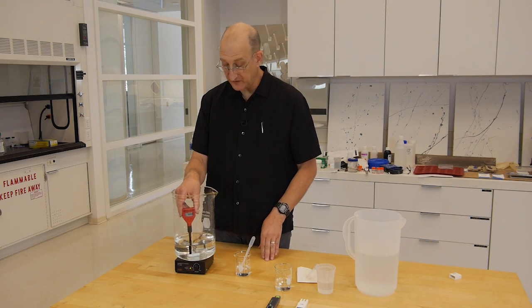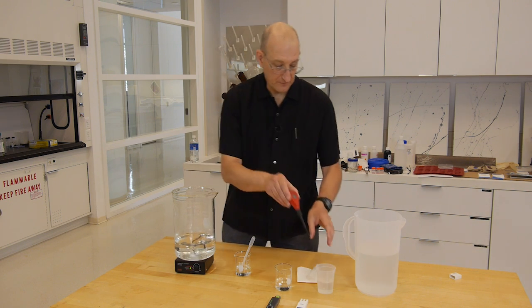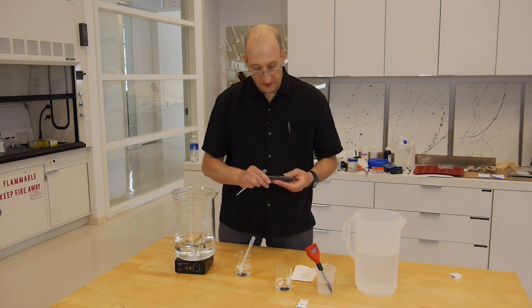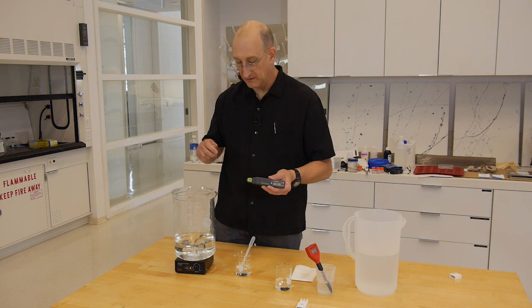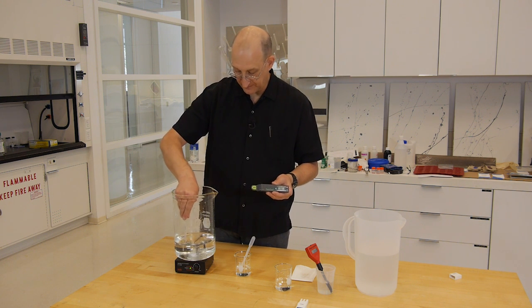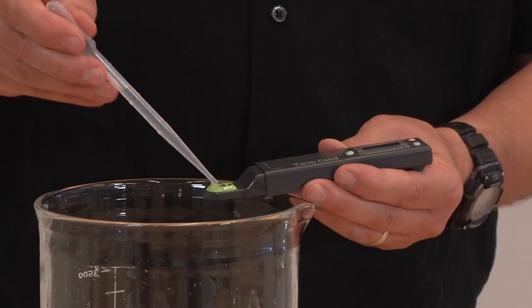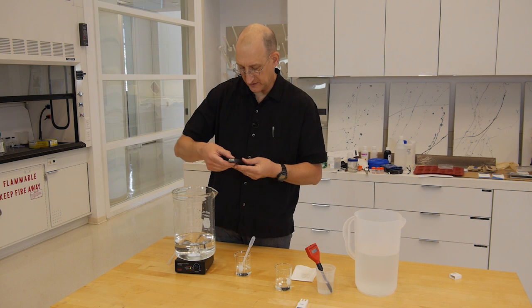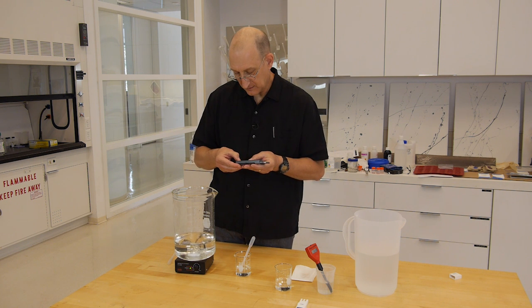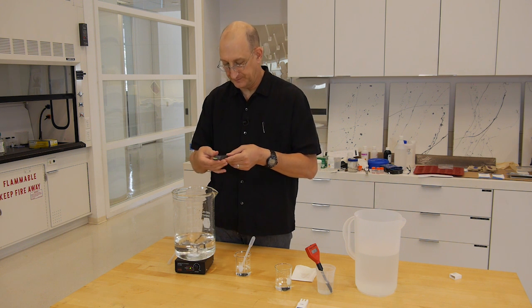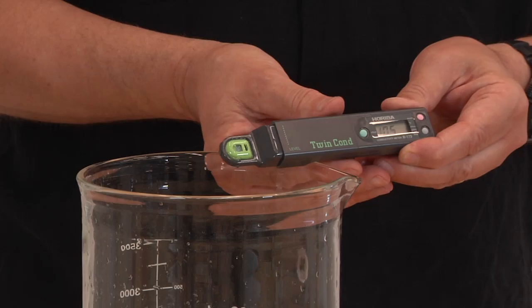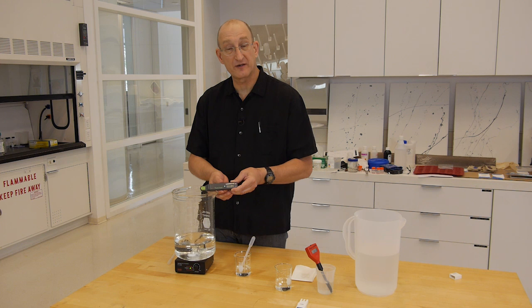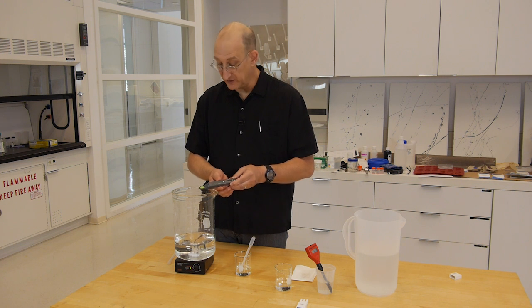So we now have the pH set to 6, we'll want to check the conductivity. So we'll use our calibrated Horiba, this is the more expensive conductivity meter. And we can just put the sample in the little sample well. And we have a reading of 10.5 millisiemens. So that's 10,000 microsiemens. And we want a final conductivity of 6,000 microsiemens. So we have to dilute this down.